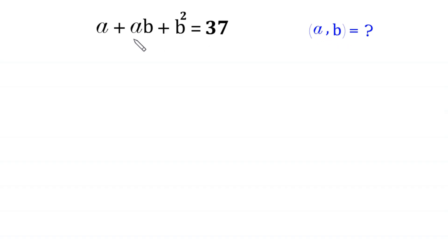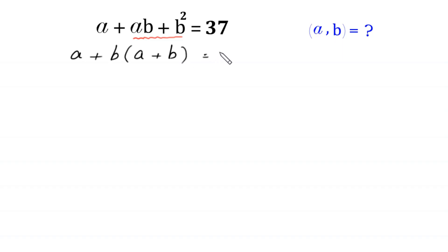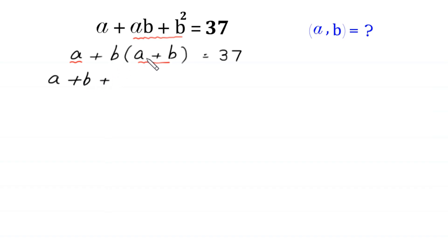Let's start by factoring out b from these two terms. We write a first, then from these two terms we factor out b, and in bracket we have a plus b, so a plus b(a plus b) is equal to 37.